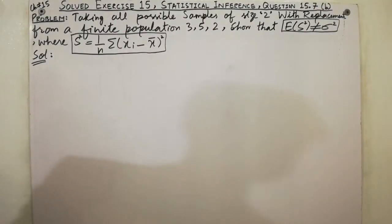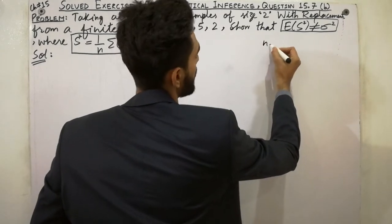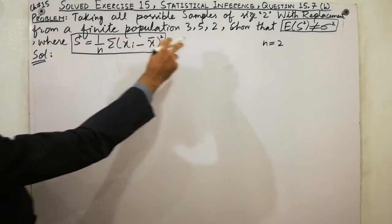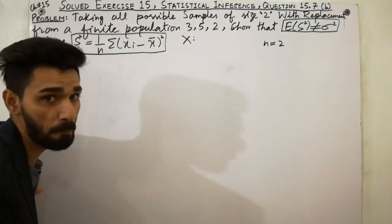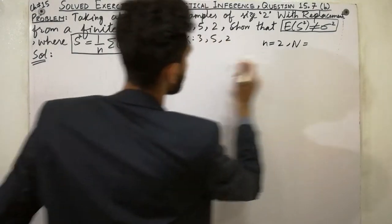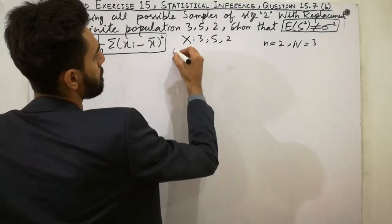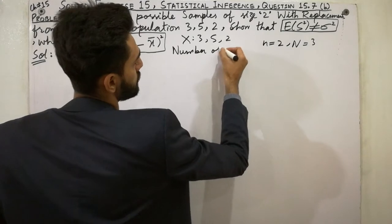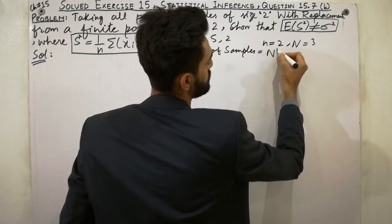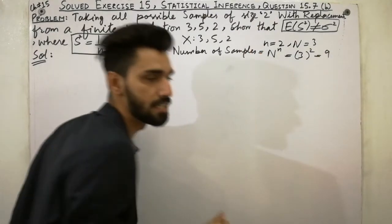We are given: take all possible samples of size 2, so small n = 2. We sample with replacement from a finite population. The population X is {3, 5, 2}, so capital N = 3. The formula for sampling with replacement: number of samples = N raised to power n = 3² = 9. So there are 9 samples total.